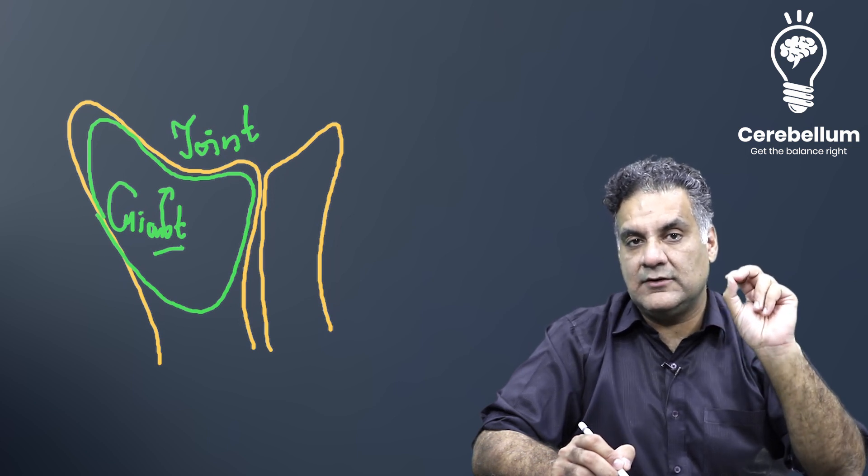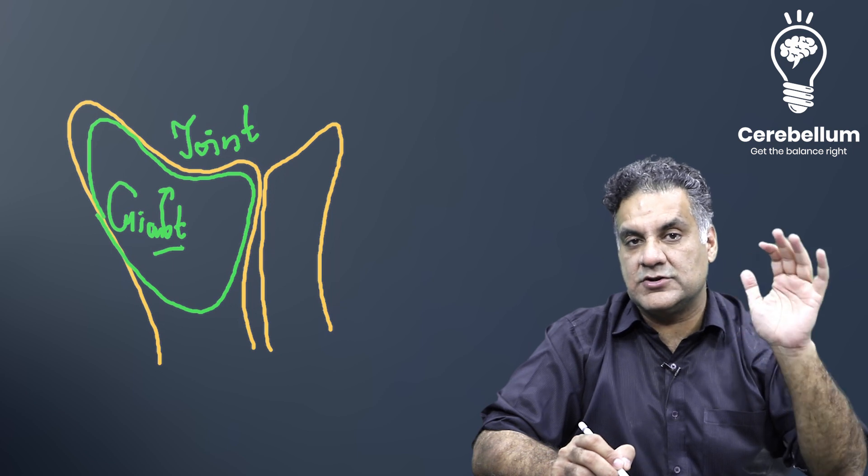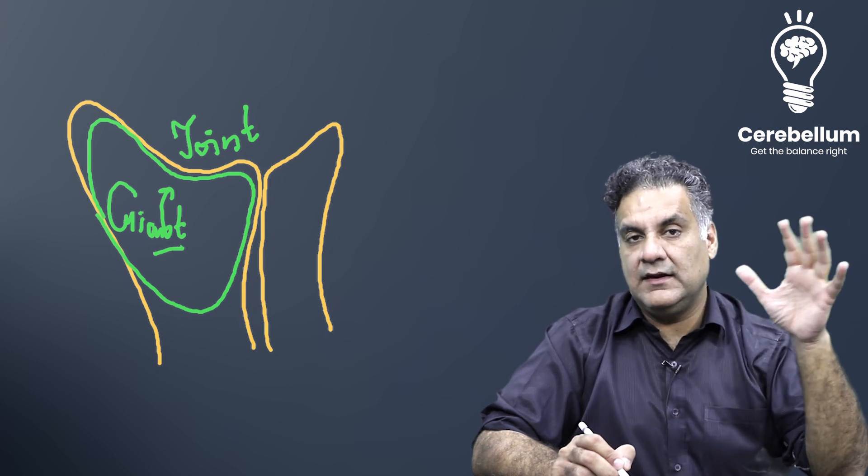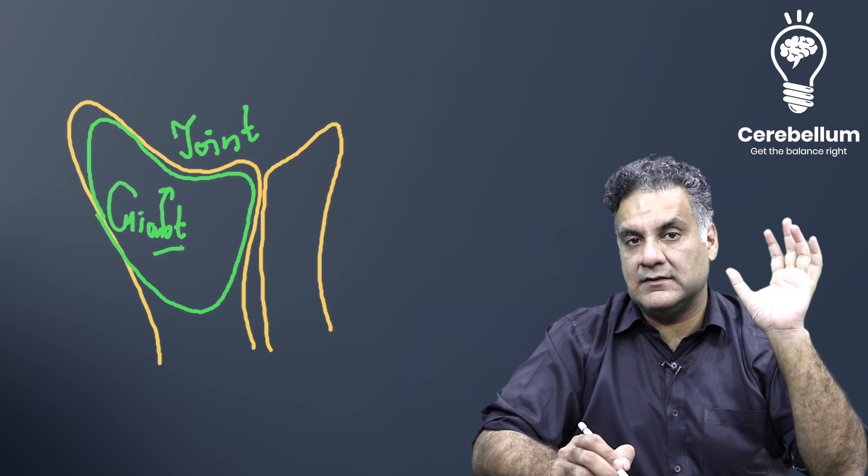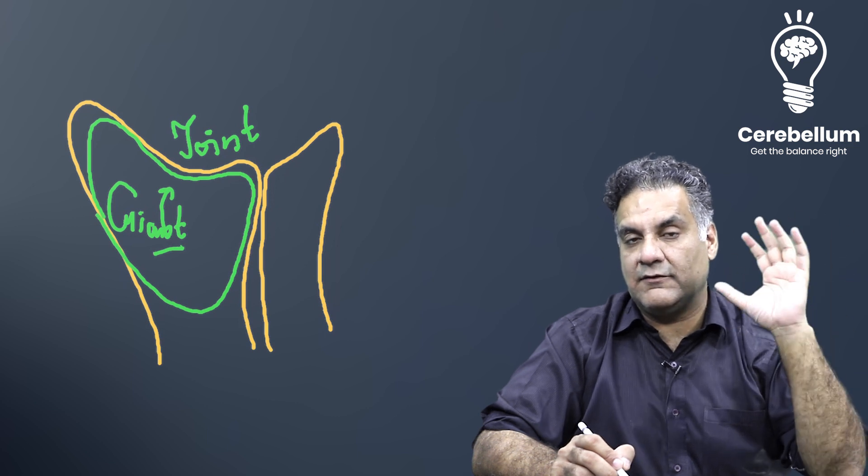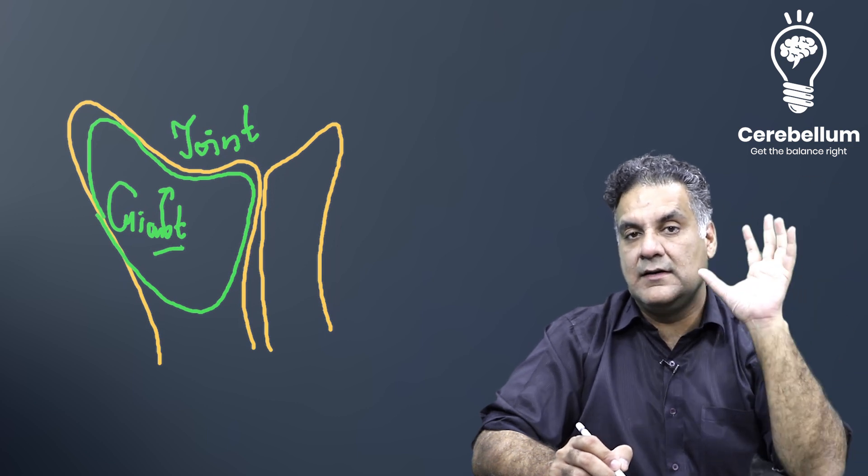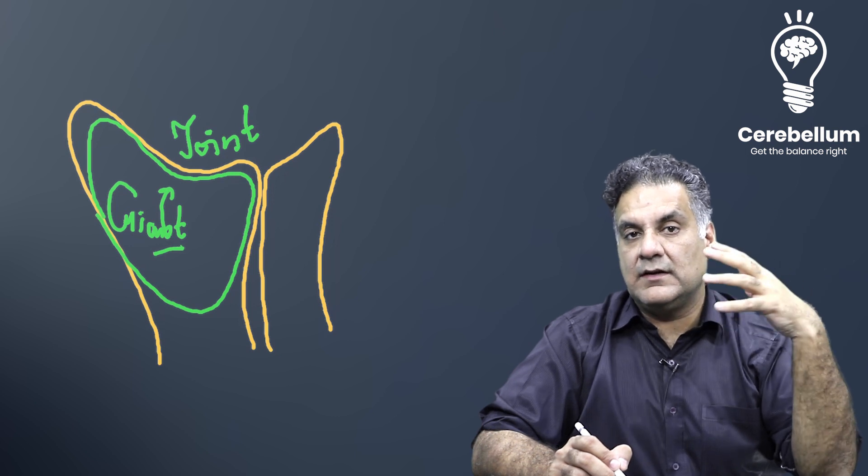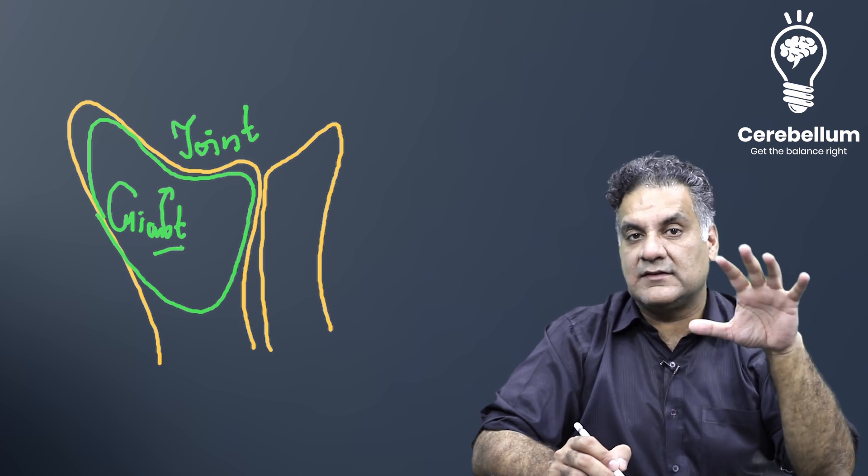Remember, the giant cell tumor will occur after skeletal maturity. So roughly at the age of 16 to 18 years beyond that. So roughly they will give you a 20 to 40 year old person. But an aneurysmal bone cyst is usually before skeletal maturity.